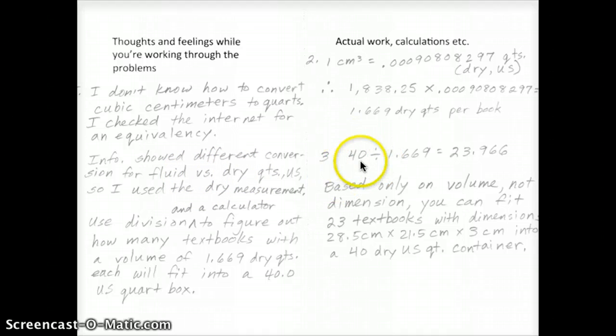And so she took that number of quarts divided by the 1669 that she got earlier for the dry quarts and found 23.966. So she said at the end, she used a division and calculator to figure out how many textbooks with a volume of 1.669 dry quarts will fit into a 40 quart box. And so she divided these numbers, got about 24. So then based on the volume, not the dimension, you can fit about 23 textbooks into this box. So this person really thought through that process. And you can see how she was thinking through.